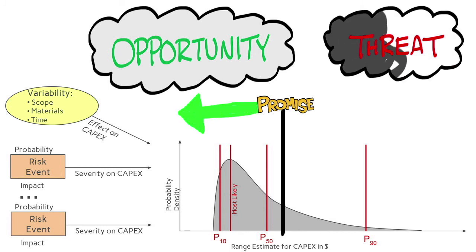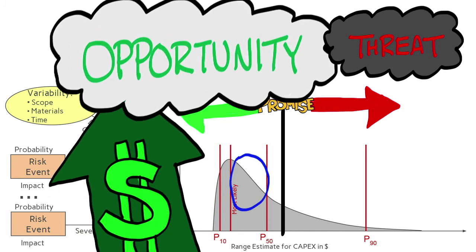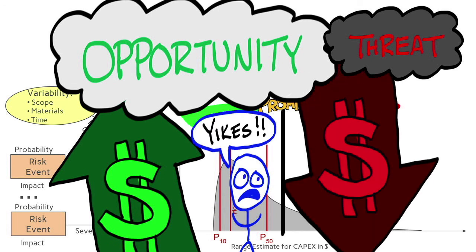While threat is the possibility of doing worse than the promise. Project managers take actions to try to enhance the opportunity and or to reduce the threat.